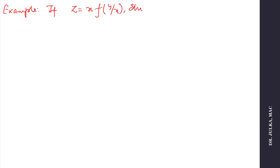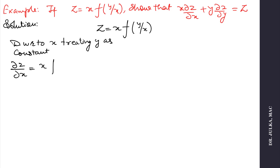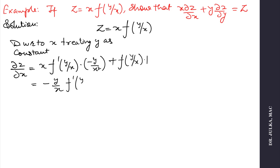Next example: if z equals x multiplied by a function f(y/x), show that x·(∂z/∂x) + y·(∂z/∂y) equals z. z is given as x·f(y/x). First we differentiate with respect to x, treating y as constant, using the product rule. So ∂z/∂x equals x·f′(y/x)·(−y/x²) plus f(y/x)·1. The answer is −(y/x)·f′(y/x) + f(y/x).